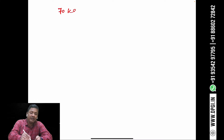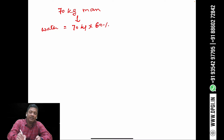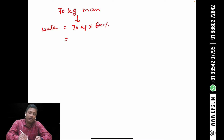Let us take the example of a 70 kg man. The total body water will be 70 kg multiplied by 60%, which equals approximately 42 liters.